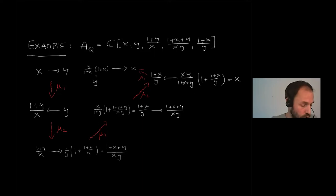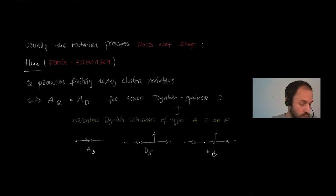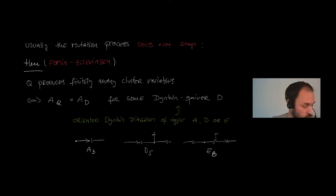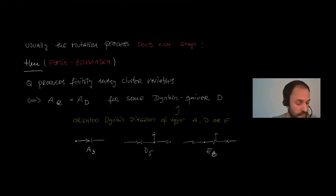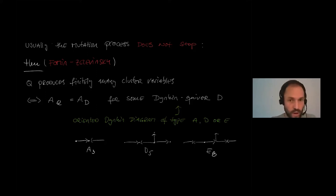Usually this procedure will not stop — it will be infinite. Due to Fomin–Zelevinsky, there is a theorem: there are only finitely many cluster variables if and only if the cluster algebra comes from a Dynkin quiver of type A, D, or E. So most of the time it will not stop.